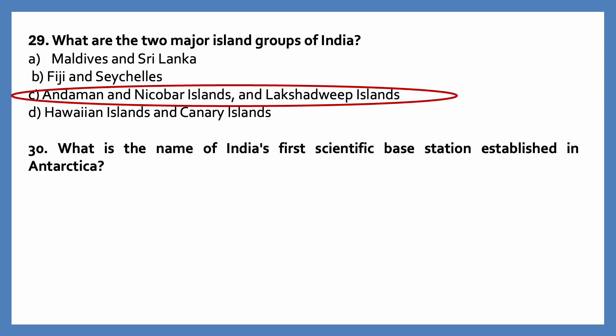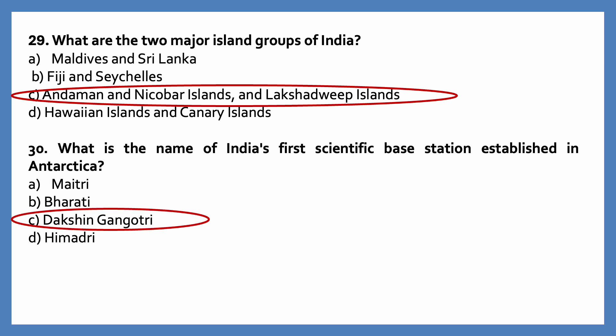What is the name of India's first scientific base station established in Antarctica? Options are: Maitri, Bharati, Dakshin Gangotri, Himatri. The correct answer is Dakshin Gangotri.